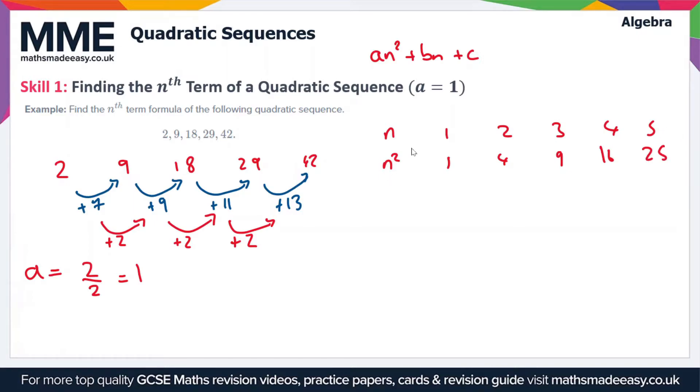Then underneath this line for N squared we're going to write the values of UN. Now UN is our original sequence. So this is the 2, 9, 18, 29 and 42.